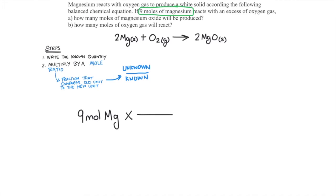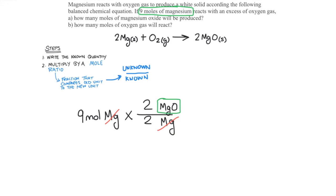So the unknown substance here is the amount of magnesium oxide, and the known substance is the amount of magnesium. We're going to compare those two amounts using the recipe. The recipe says there will be 2 moles of magnesium oxide for every 2 moles of magnesium. So our mole ratio is going to look like this: 2 moles of magnesium oxide over 2 moles of magnesium — it's a 1 to 1 ratio. So I have 9 moles of magnesium times 2 over 2. The moles of magnesium cancel, and we're left with moles of magnesium oxide. Now 2 over 2 is just 1, so 9 times 1 gives us 9 moles of magnesium oxide.